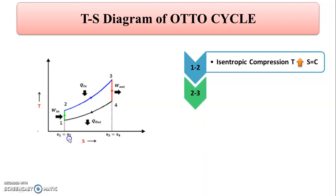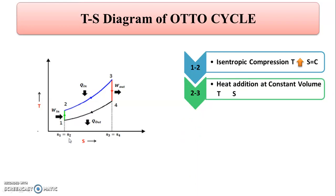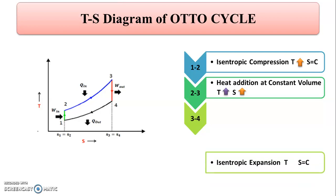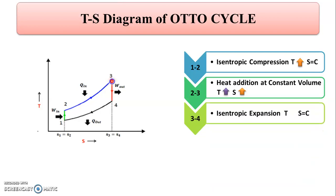Process 2 to 3 is heat addition at constant volume. As heat is added, temperature increases from T2 to T3, and the entropy also increases from S2 to S3. Process 3 to 4 is isentropic expansion, during which temperature decreases from T3 to T4, and entropy remains constant.